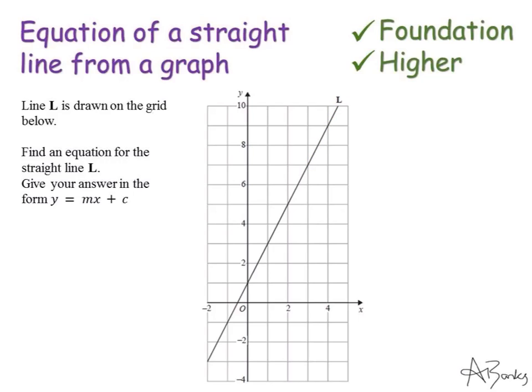So the c is actually easiest to find first. I'm looking at where does this line cross the y-axis. Well it crosses it just here and this is at 1 on the y-axis. So my value of c in this case is 1.